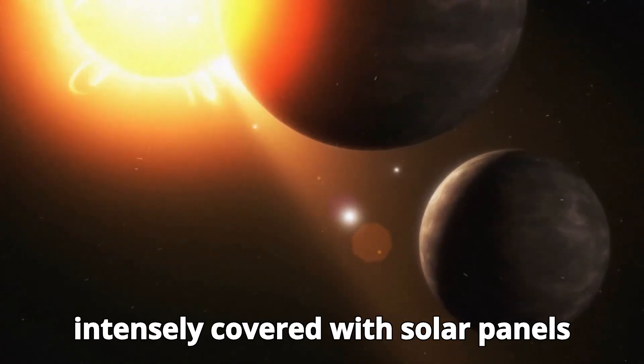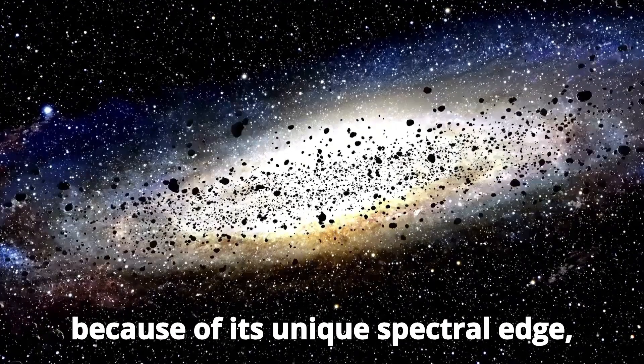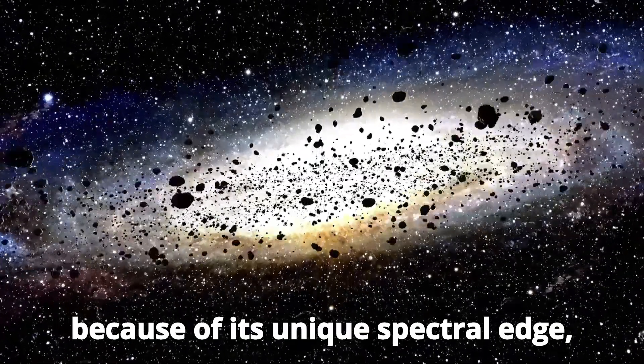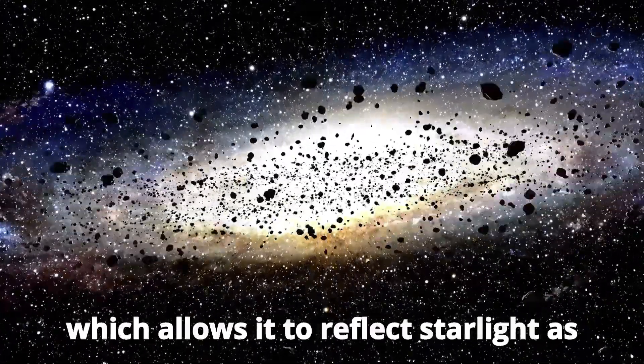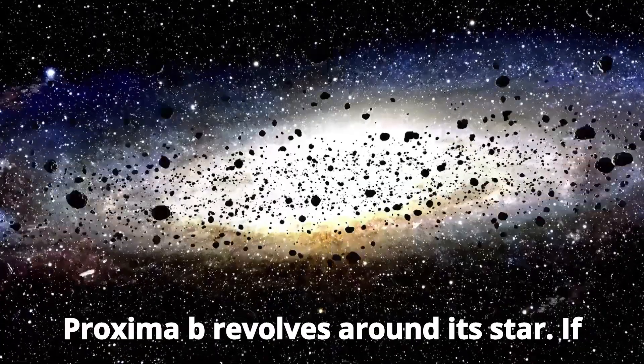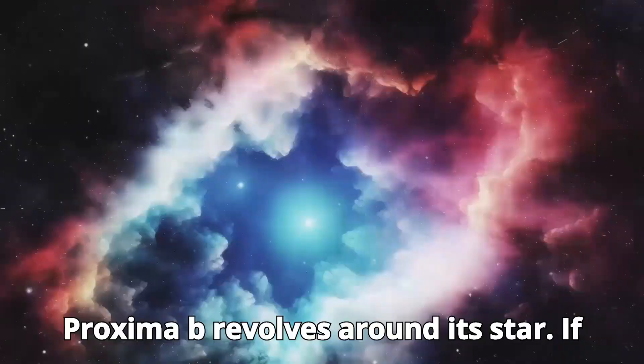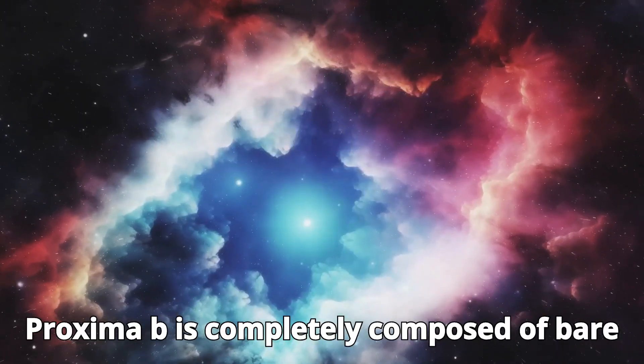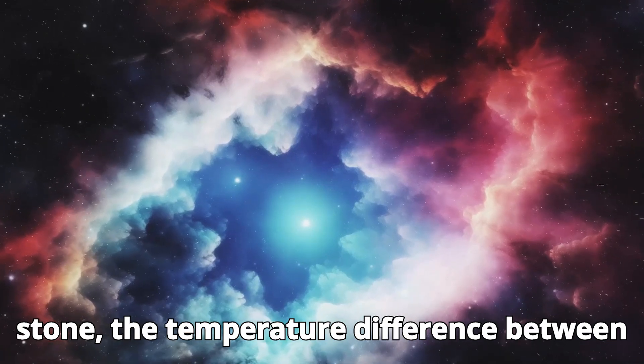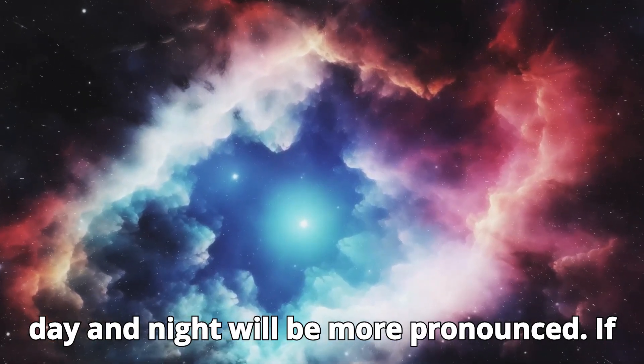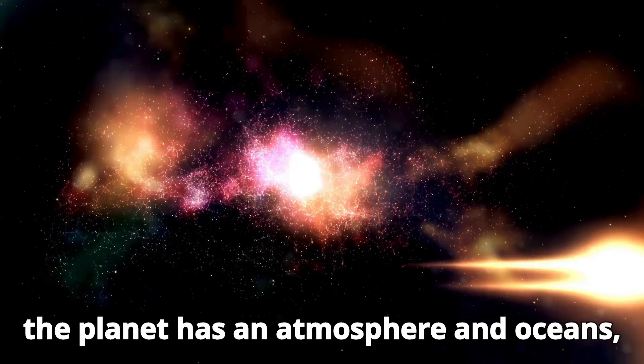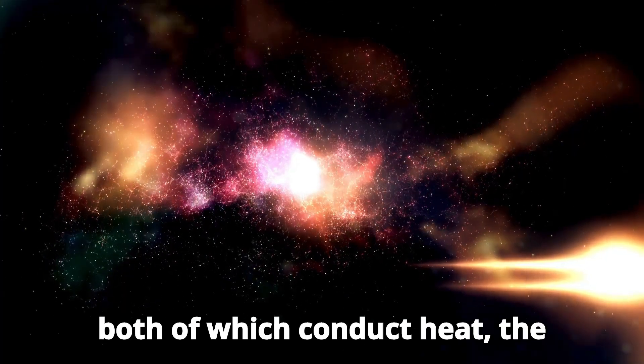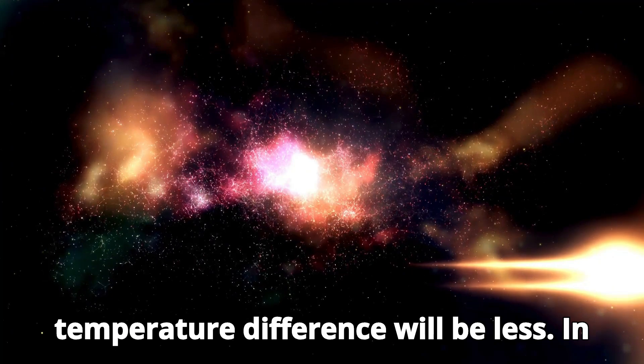Proxima b's day side is intensely covered with solar panels because of its unique spectral edge, which allows it to reflect starlight as Proxima b revolves around its star. If Proxima b is completely composed of bare stone, the temperature difference between day and night will be more pronounced. If the planet has an atmosphere and oceans, both of which conduct heat, the temperature difference will be less.